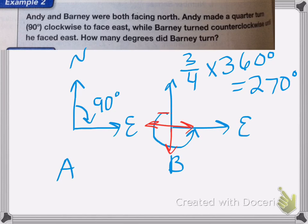So in this case, I could think three times 90 degrees. And I'd still get 270 degrees was the total amount that he turned.